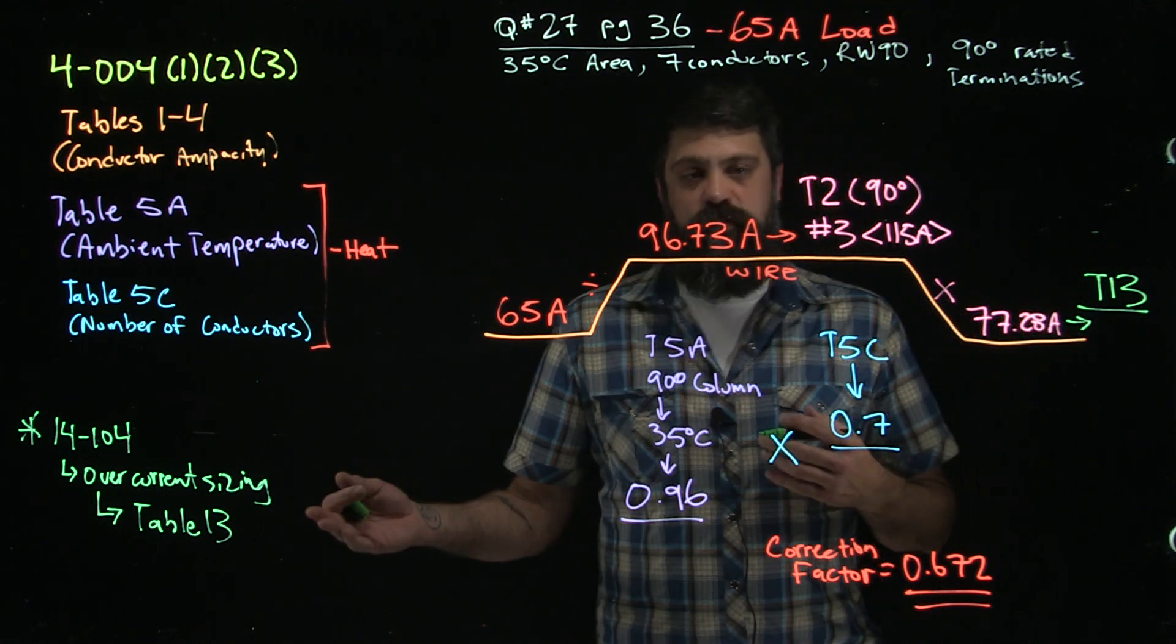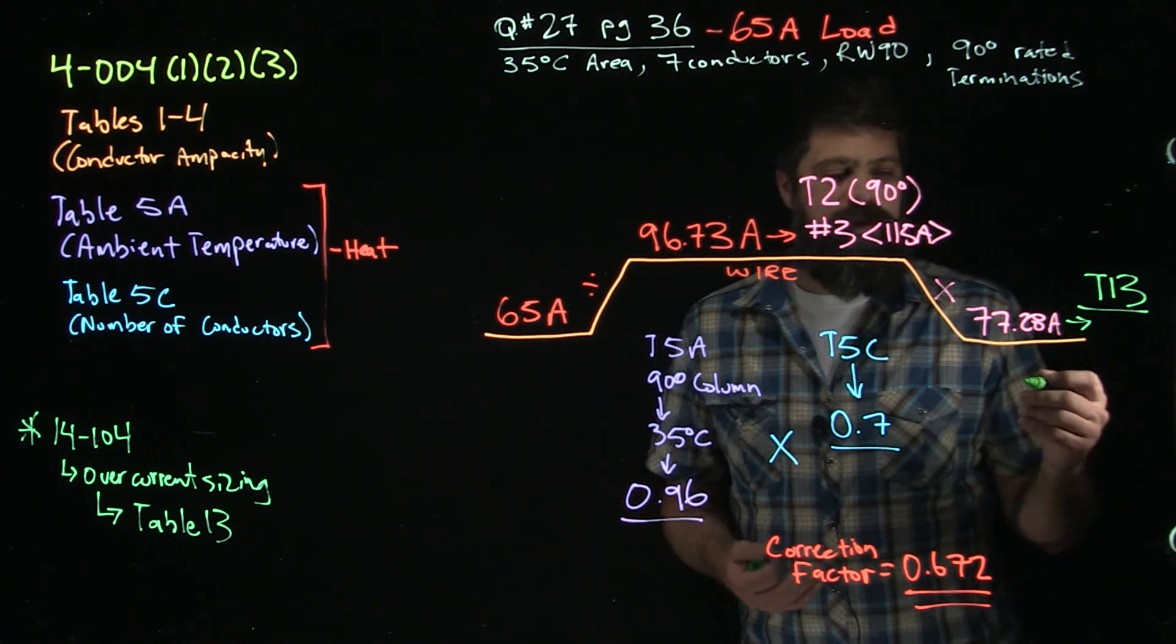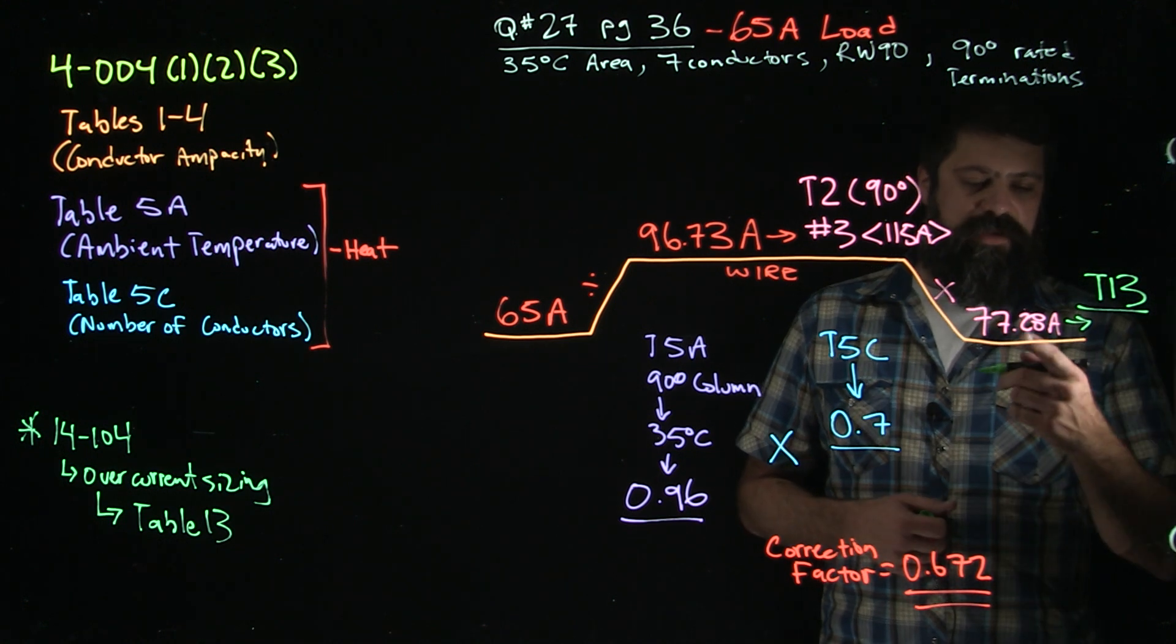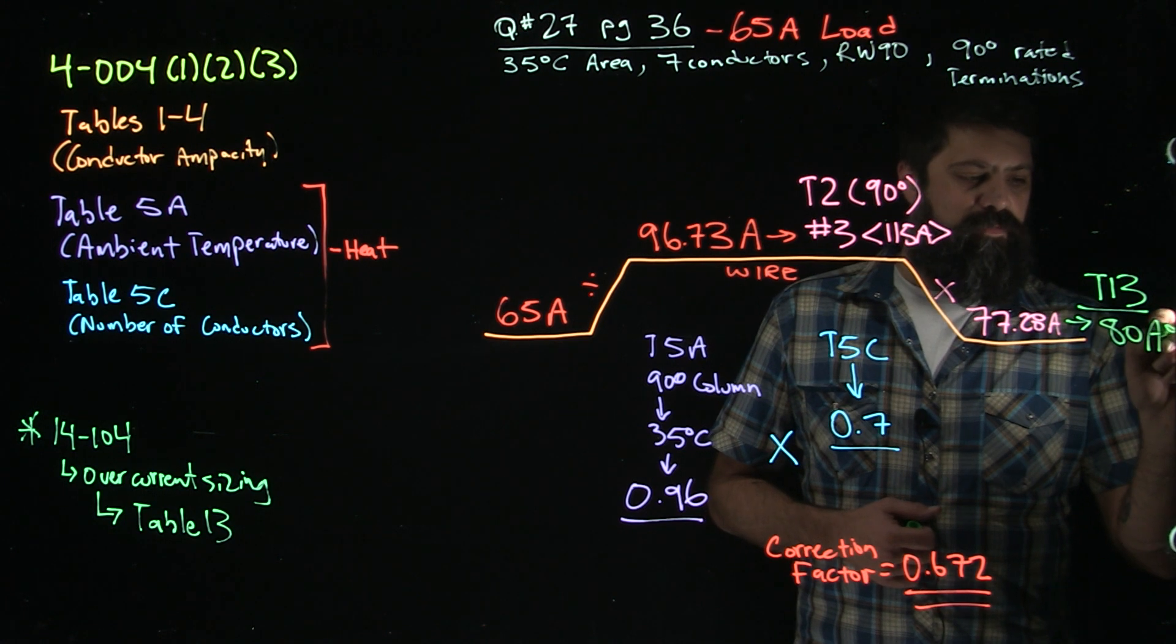Table 13, I need a breaker that's going to allow only 77.28 amps, but like the rule says, 14.104, it falls into that range. That's how Table 13 is arranged. So I can actually go up on this one. In that range, 77.28 amps, I'm going to pick an 80 amp overcurrent.